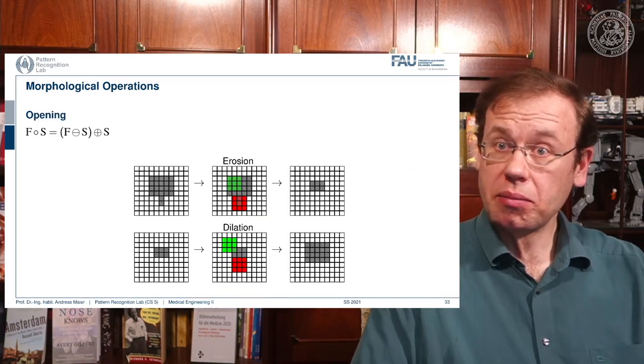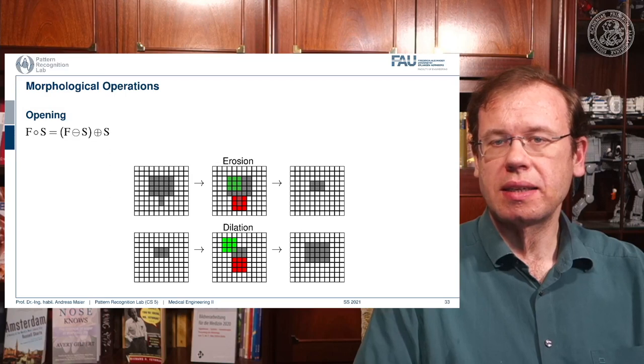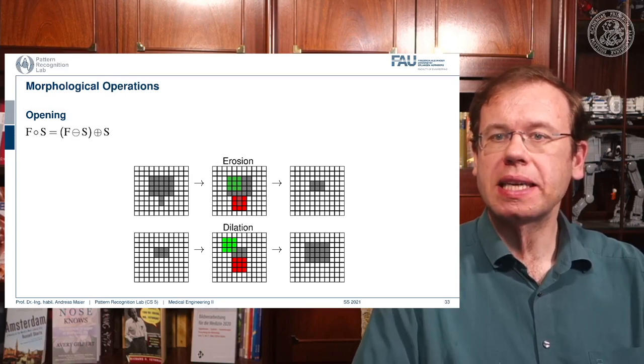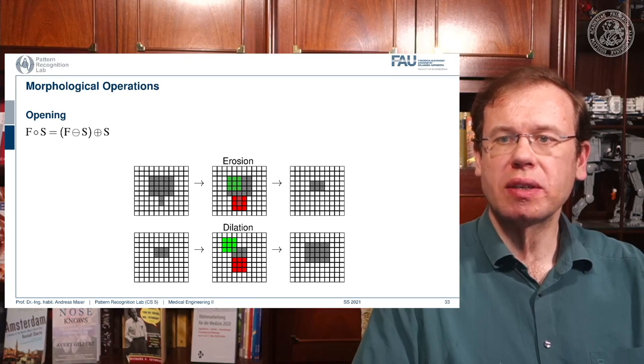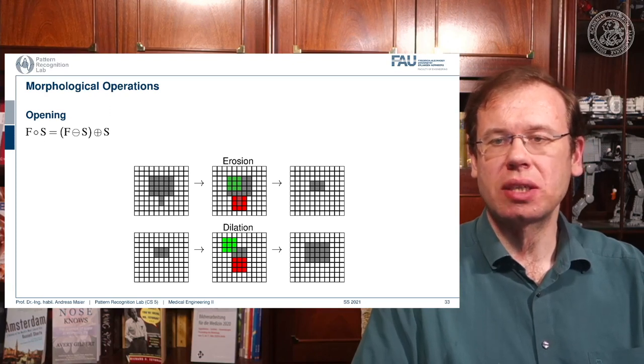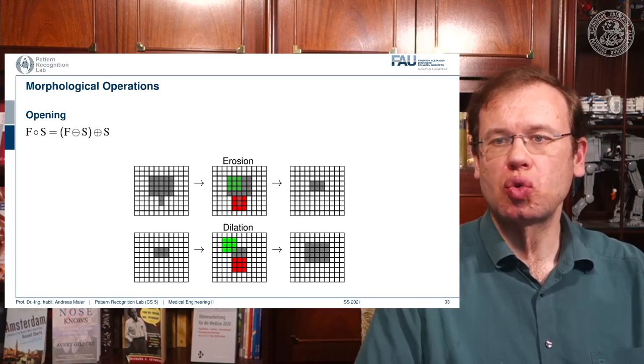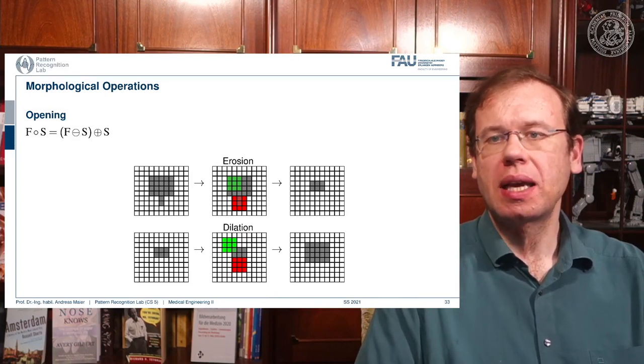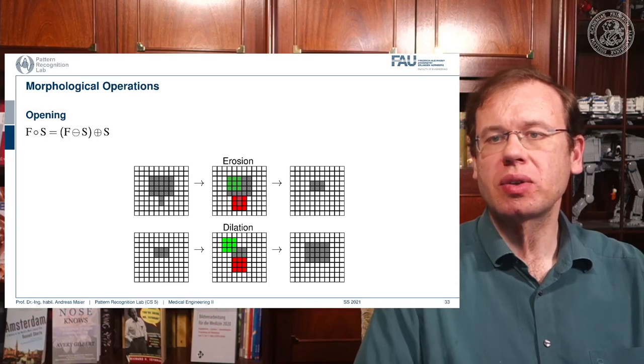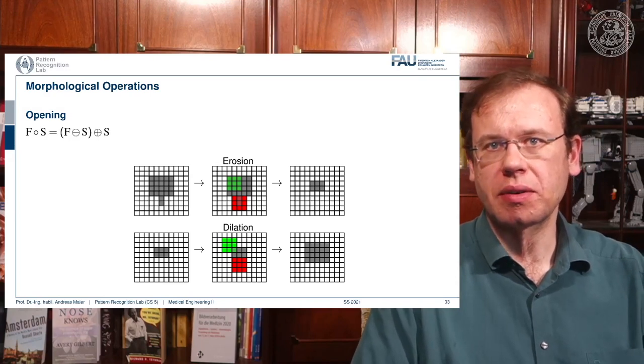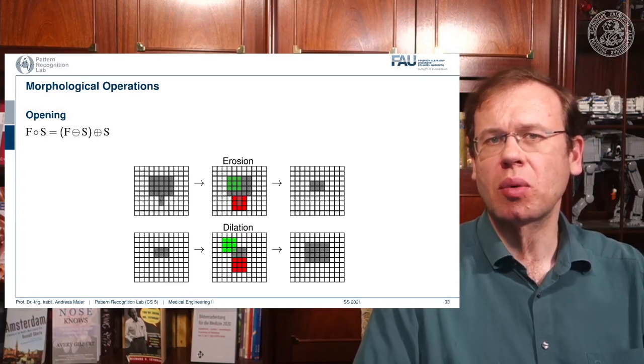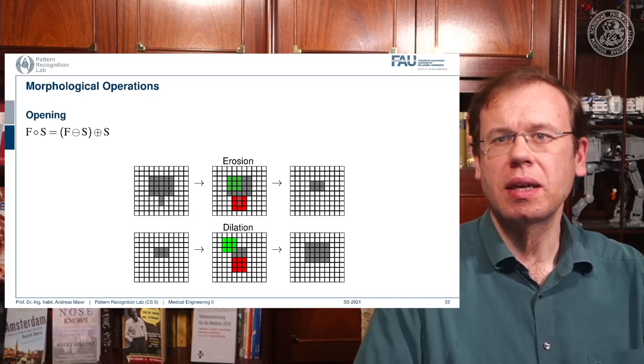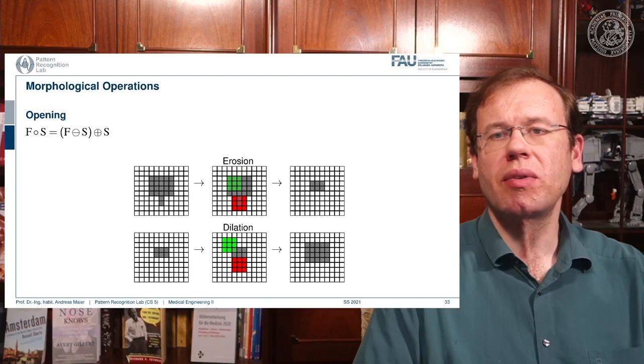We can also combine morphological operations. And one combination is opening. Opening is applying first erosion then dilation, so first we shrink and then we expand. And opening is very useful if you want to preserve the size of the mask but you want to get rid of small outliers. If you have small antennas like the one in the example here, you can get rid of them with erosion.